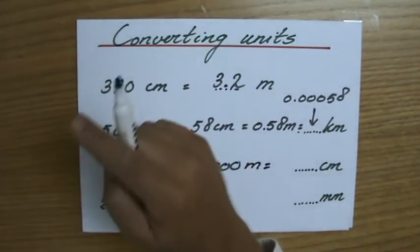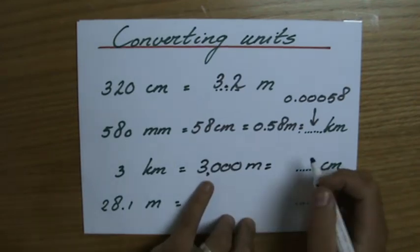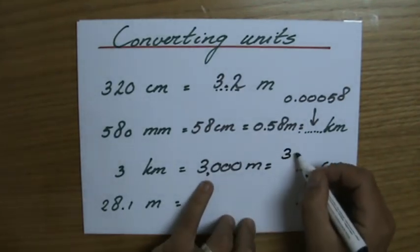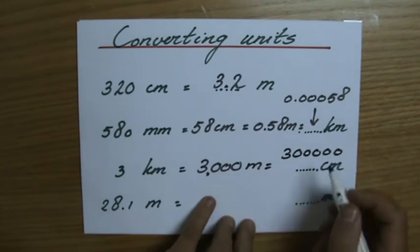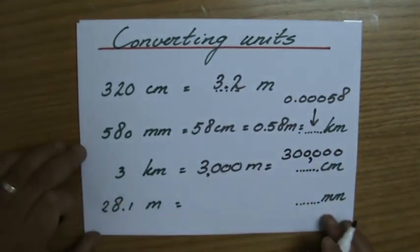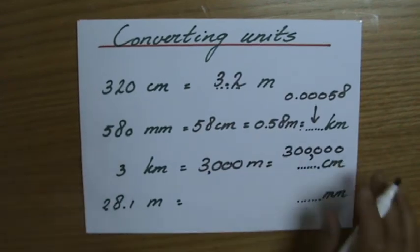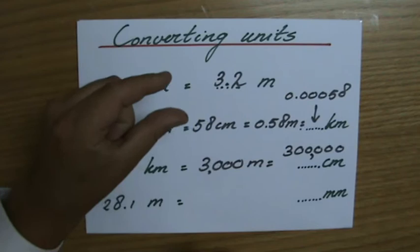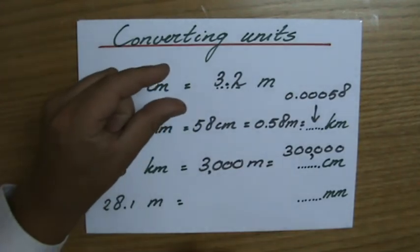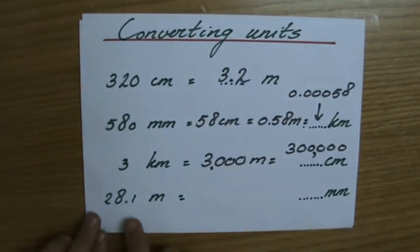Then from meters to centimeters: there are a hundred centimeters in one meter, so multiply by a hundred. Three thousand meters times a hundred gives three hundred thousand centimeters. Three hundred thousand centimeters fit into three kilometers.